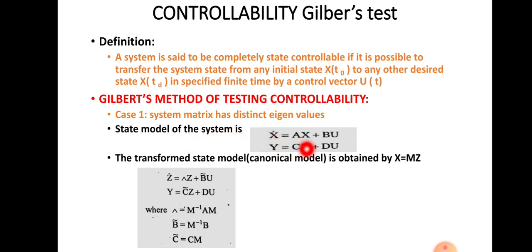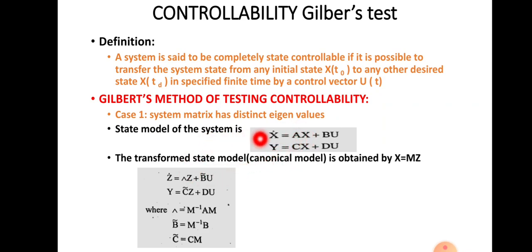We know from previous videos that the state model of the system is represented as: state equation x-dot = Ax + Bu, and output equation y = Cx + Du. If the system has distinct eigenvalues, it means the system matrix can be diagonalized and the state model can be converted into canonical form.